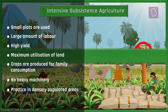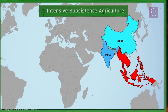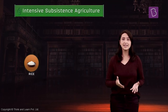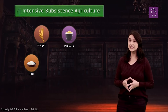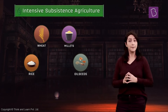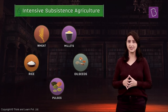People living in intensely populated regions practice intensive subsistence agriculture. This type of agriculture is practiced mainly in South and Southeast Asia including China and India. Rice, wheat, millets, oilseeds, and pulses are some of the crops cultivated.